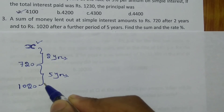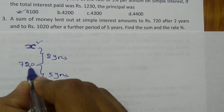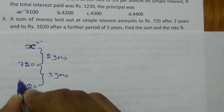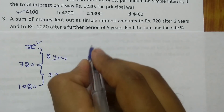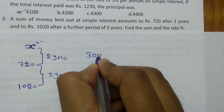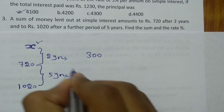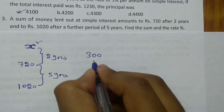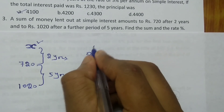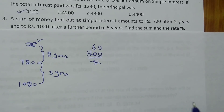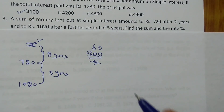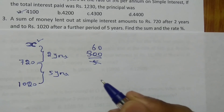This type of problem is quite simple. The amount increased from Rs.720 to Rs.1020 over 5 years — that is Rs.300 total increase. So in 5 years Rs.300 increased, meaning in 1 year Rs.60 increases. Rs.60 is the constant simple interest credited to the account every year.